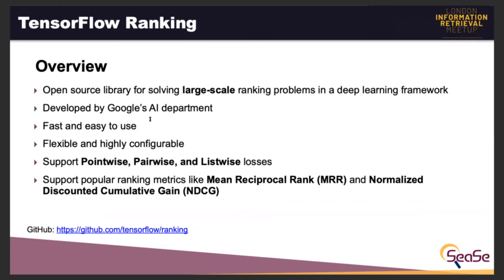TensorFlow Ranking is a library developed by Google's AI department on the basis of TensorFlow. It is an open source deep learning library for learning to rank, developed to support large-scale applications with millions or billions of training examples. This library is fast, easy to use, and openly available on GitHub. It is easy to implement with few lines of code, creates high-quality ranking models, and is flexible and highly configurable. The unified framework gives the ability to evaluate and choose among an array of different ranking models within a single library.